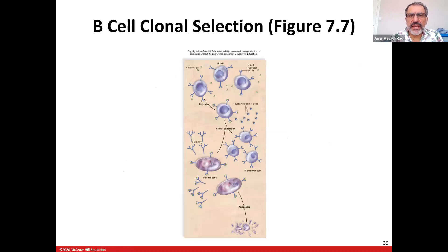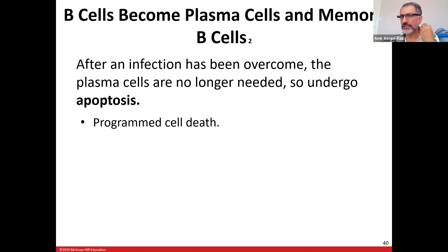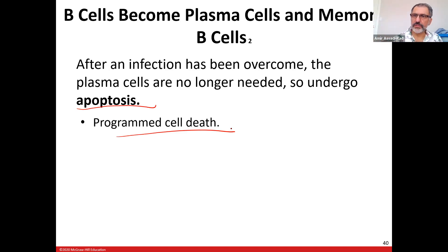B cells clonal selection means B cells multiply and multiply to be ready. Apoptosis means programmed cell death — all your cells from head to toe undergo this: red blood cells at 120 days, skin cells every two to three weeks, neurons and muscle cells every six to seven years. After an infection has been overcome, the plasma cells are no longer needed and undergo apoptosis. This is different from necrosis.